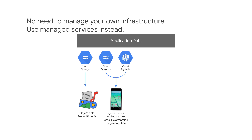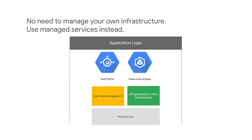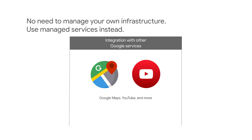High-volume, semi-structured data like gaming or streaming data can be stored in NoSQL databases such as Cloud Datastore and Bigtable. Customer information can be stored in a relational database such as Cloud SQL or Cloud Spanner. Application logic can be deployed and executed on Google App Engine or Google Kubernetes Engine. You can also integrate with other Google services such as Google Maps and YouTube.